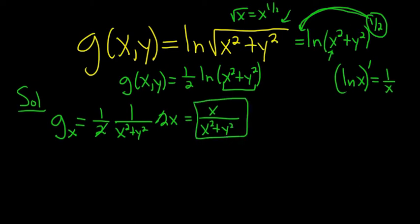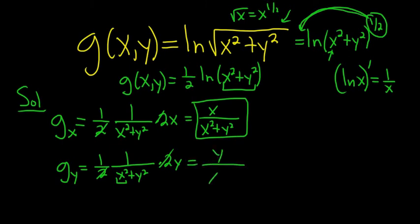So that's the partial with respect to x. Let's do the partial with respect to y now. Same thing, the 1 half hangs out. That's 1 over x squared plus y squared, times the derivative of the inside. So this time, the derivative of x squared is 0 because we're treating all of the x's as constants. So the derivative of x squared is 0, and the derivative of y squared is 2y. The 2s cancel, so we get y over x squared plus y squared.